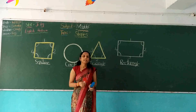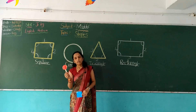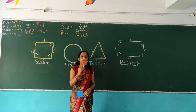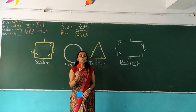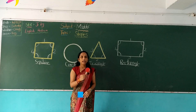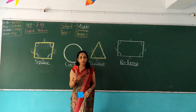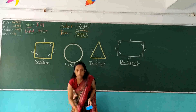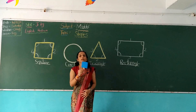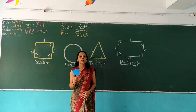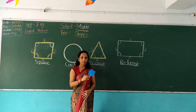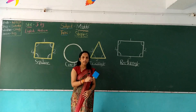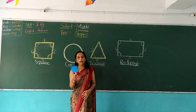Circle shape, circle shape, where are you? Here I am, here I am, how do you do? Square shape, square shape, where are you? Here I am, here I am, how do you do?